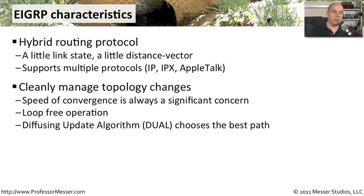Also built into EIGRP is a way to avoid loops, so you can feel relatively certain that EIGRP will make sure we don't accidentally set up any loops between different networks. It uses an algorithm called a Diffusing Update Algorithm, abbreviated as DUAL, to decide which direction traffic should go when it has a choice.